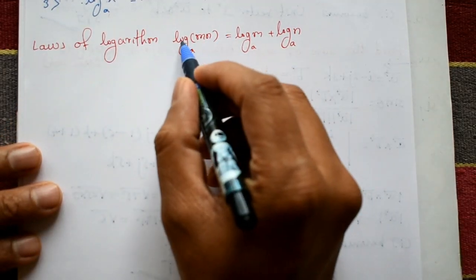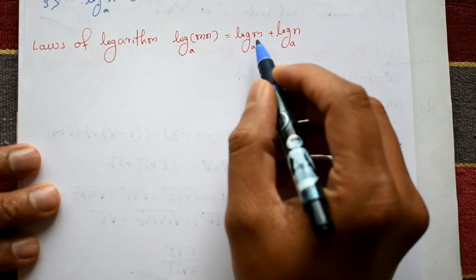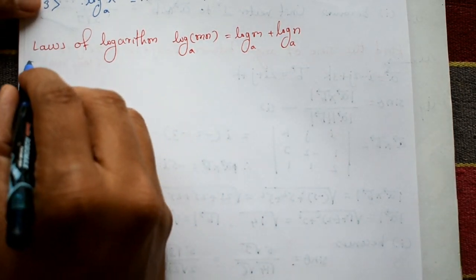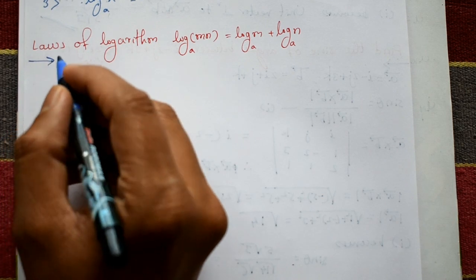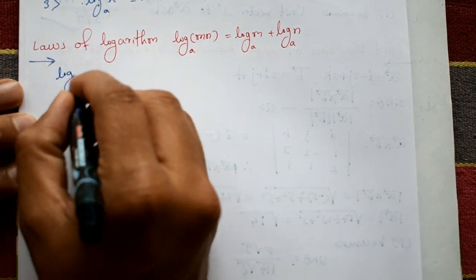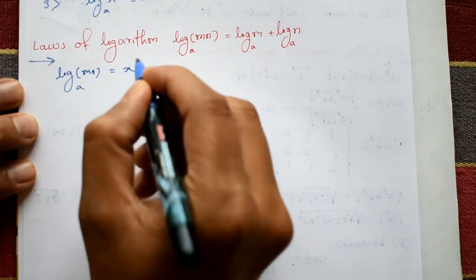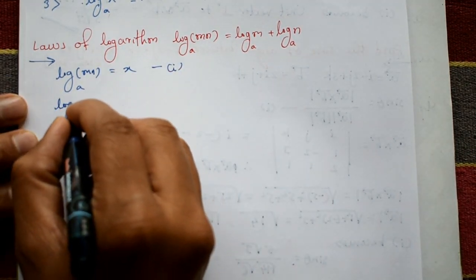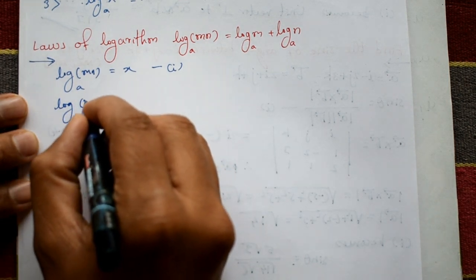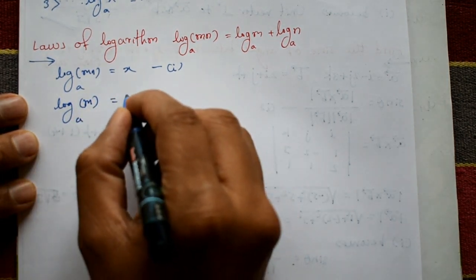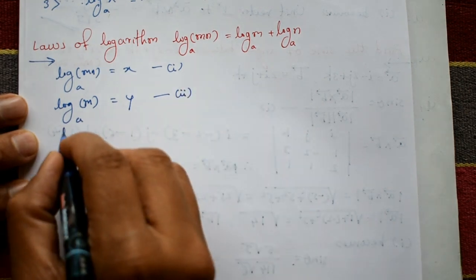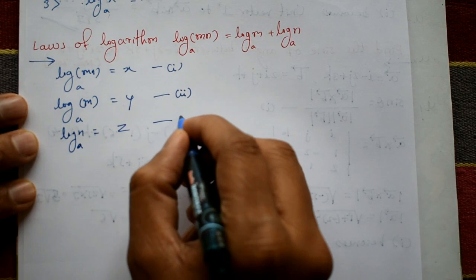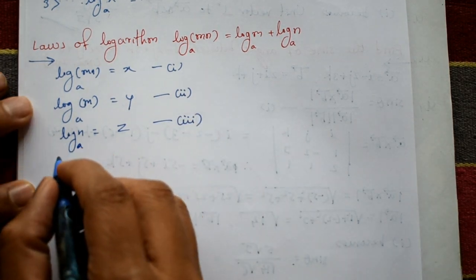Laws of logarithm: log(mn) to the base a equals log(m) to the base a plus log(n) to the base a. Now for the proof, we take log(mn) to the base a equal to x — call this equation number one. And log(m) to the base a equal to y — that is equation number two. And log(n) to the base a equal to z — that is equation number three.